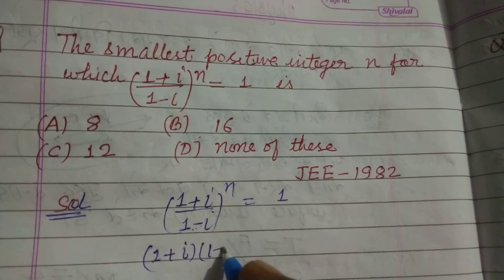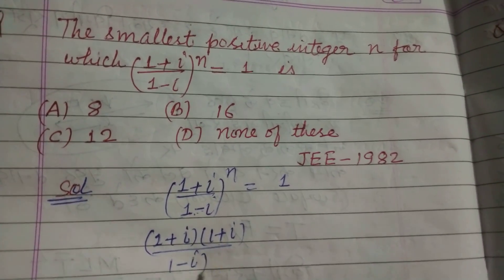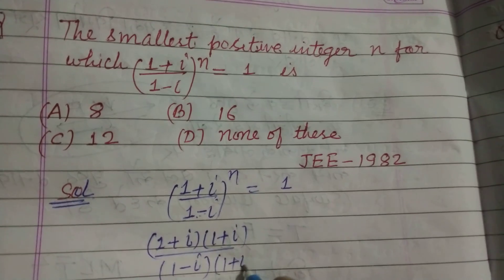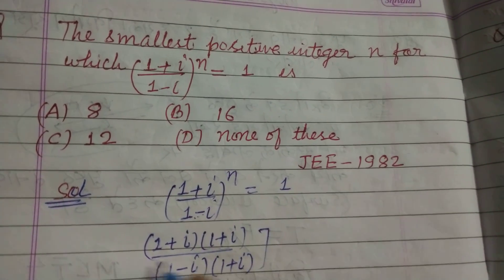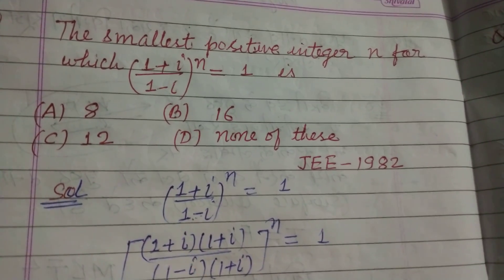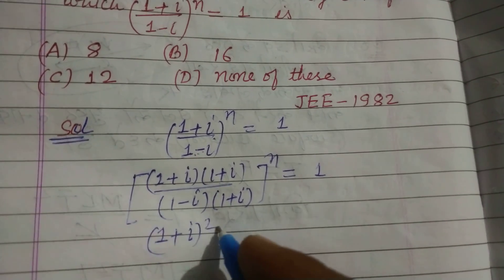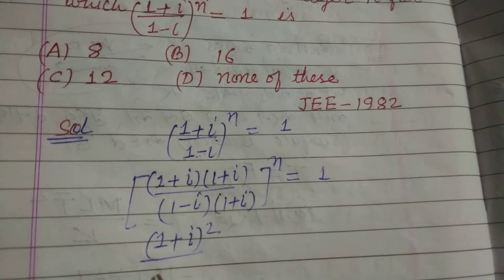So (1+iota)(1+iota) over (1-iota)(1+iota) to the power n equal to 1. And this is whole square of 1+iota over a+b times a-b.